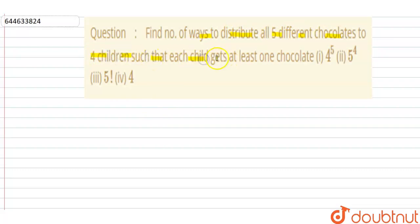Okay, here is the formula given. So let's see how we can solve. First of all, we have to write here that the question says find the number of ways to distribute all five different chocolates to four children.